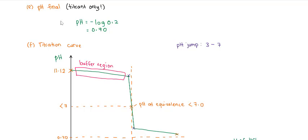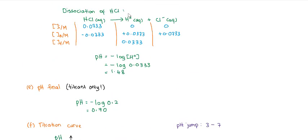The final pH is for titrant only. Since our titrant is HCl, as shown in the reaction table, HCl will fully dissociate into H+ and Cl- ions. The concentration of HCl is 0.2 M, so the final pH is 0.7.